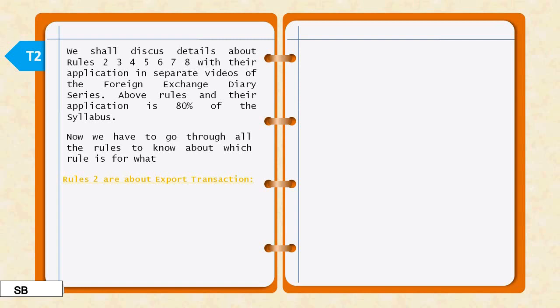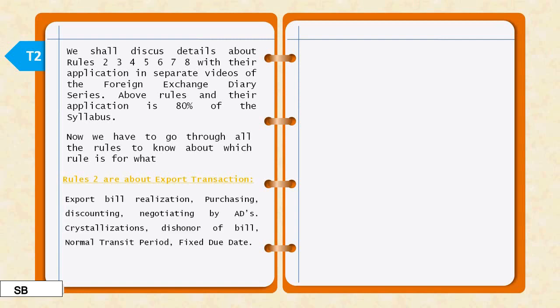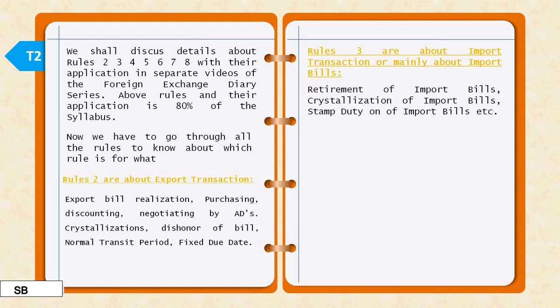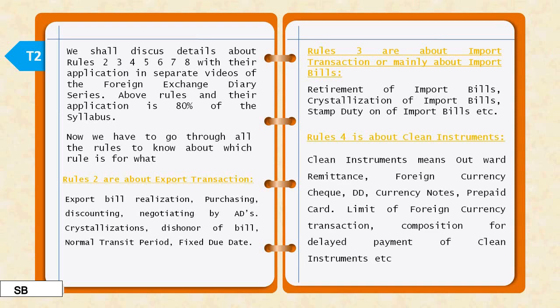Rule 2 covers export transactions — processing, discounting, negotiating, crystallization, renewal of bill, normal transactions, and fixed duty date. Rule 3 is about import transactions — import bill and actual realization. Rule 4 is about clean instruments — items that are not directly connected to import or export, such as foreign currency cheques, traveler's currency notes, and prepaid cards. These are called clean instruments.